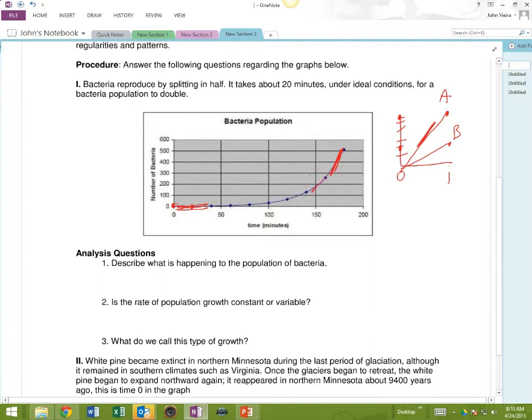And so what you'll notice is, look at the slope of this line, is it constant or variable? It's variable, meaning it changes, it varies. So when you describe what's happening to the population of bacteria, you can use a lot of things. It grows slowly at first and then rapidly towards the end.